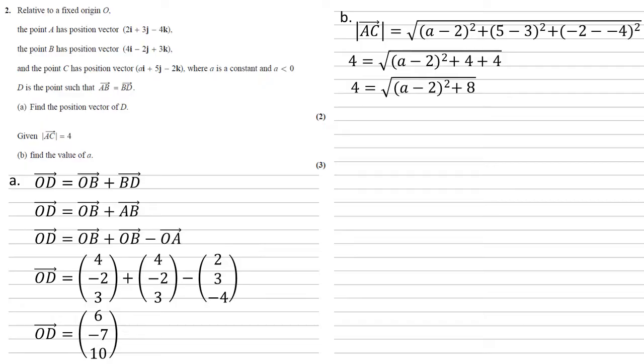On the right hand side, those 4s come together to give us 8. Squaring both sides gives us that 16 equals (a minus 2) all squared plus 8. So (a minus 2) all squared must equal 8.